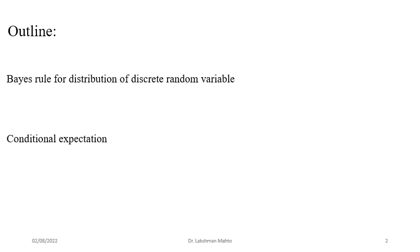Conditional expectation is very much essential for the linear model where your response happens to be continuous in nature. When your response is discrete in nature, you rely on estimation of conditional probability. But if your estimation happens to be continuous in nature, then you have to talk about estimation of conditional expectation, which is defined with the help of the conditional probability mass function. If the random variable happens to be continuous, then the conditional density function would come in.